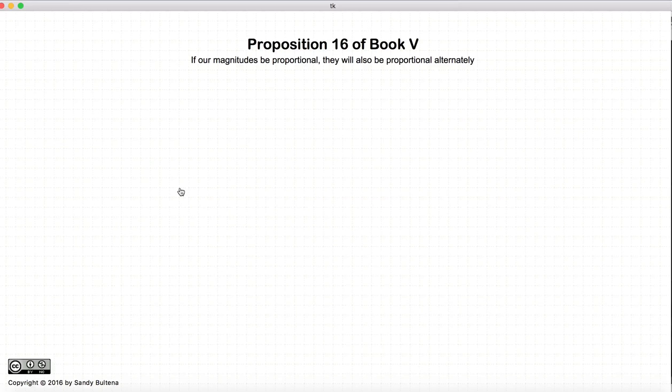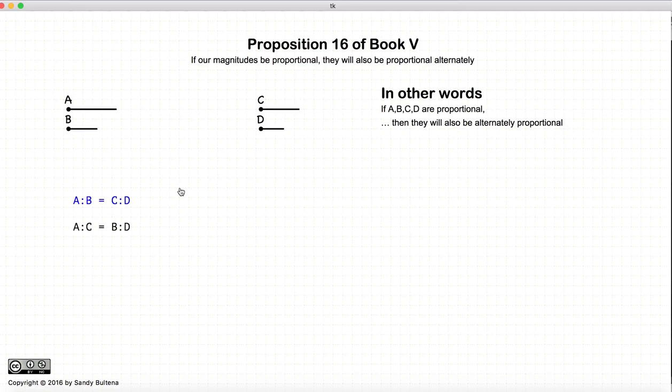So let's look at the proposition. If we have two ratios, A to B and C to D, and if they are equal, then the alternate ratios, A to C and B to D, will also be equal. So this is the proposition stated very simply.